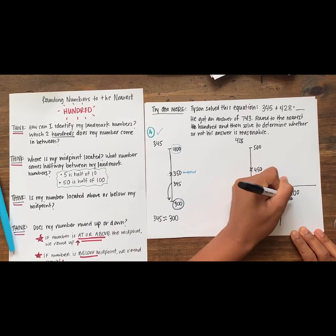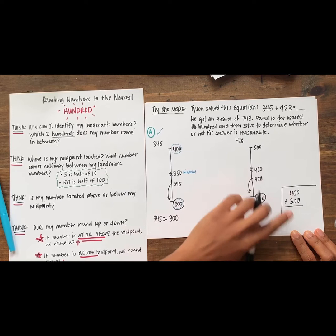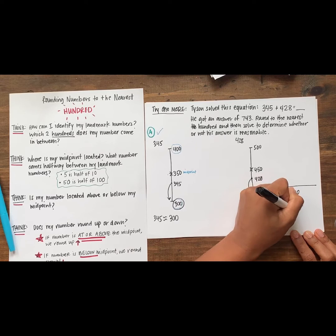Because our numbers have been rounded to multiples of 100, this makes addition really easy. 400 plus 300 is? Say it out loud. Yes, 700.